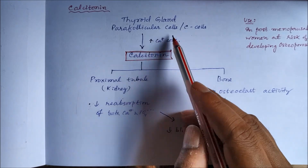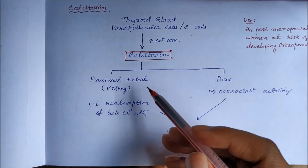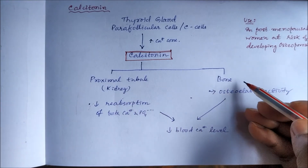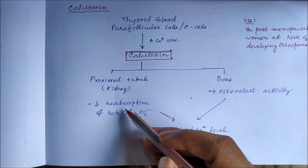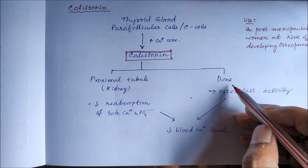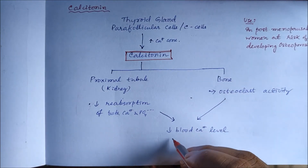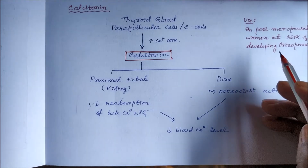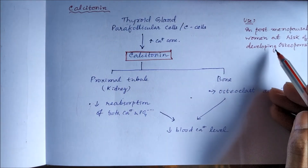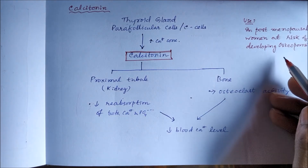When there is an increase in plasma calcium concentration, C cells release calcitonin. Calcitonin acts on the kidney and bone. In the kidney it decreases reabsorption of calcium and phosphate. In bone it inhibits osteoclast activity, thereby ultimately decreasing the blood calcium level. Calcitonin can be useful in postmenopausal women who are at risk of developing osteoporosis.